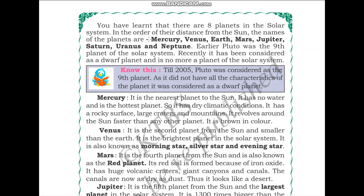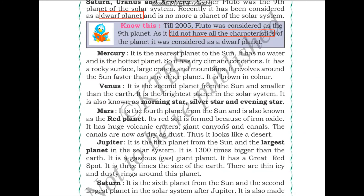The planets are Mercury, Venus, Earth, Mars, Jupiter, Saturn, Uranus, and Neptune. Earlier, Pluto was considered the ninth planet of the solar system, but recently it has been reclassified as a dwarf planet. Until 2005, Pluto was considered the ninth planet, but as it did not have all the characteristics of a planet, it was classified as a dwarf planet.